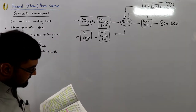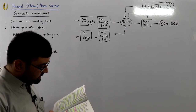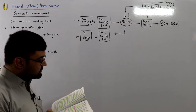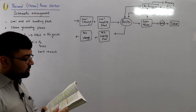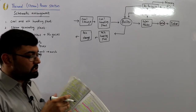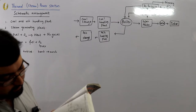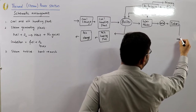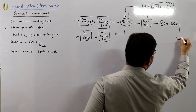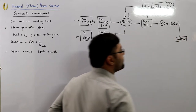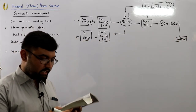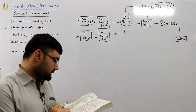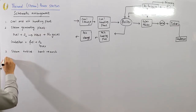After giving its heat energy to the turbine, the steam is exhausted to the condenser. The condenser condenses the exhausted steam by means of cold water circulation — converting the steam back into water.